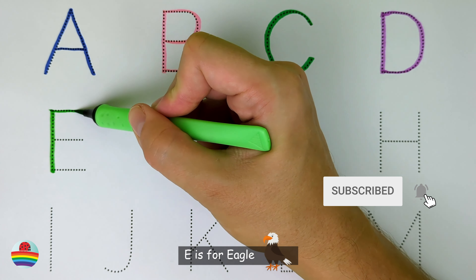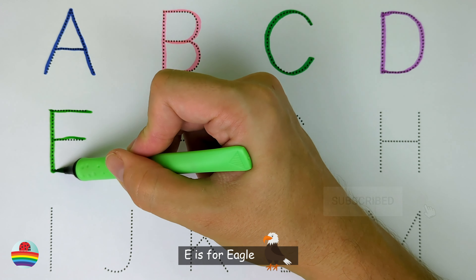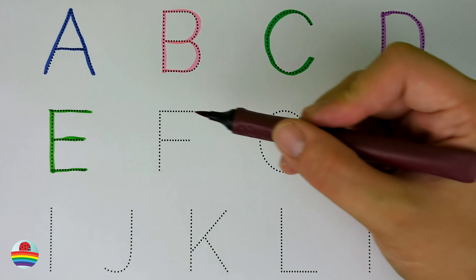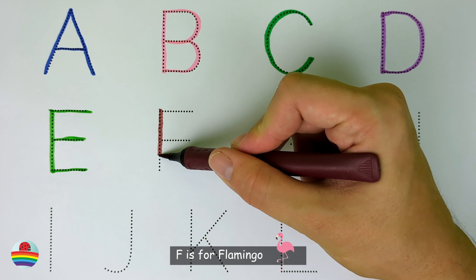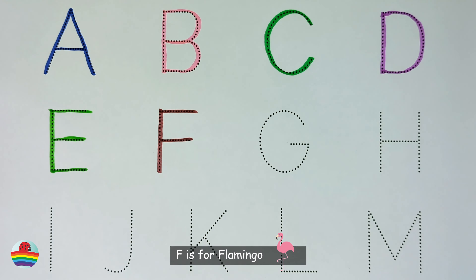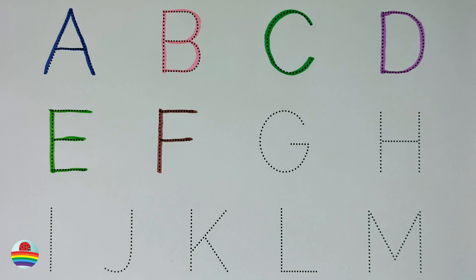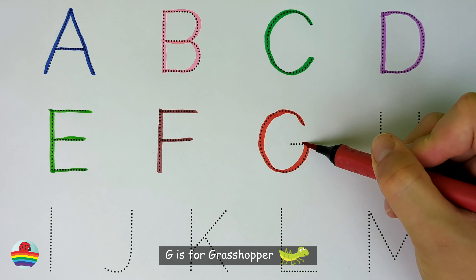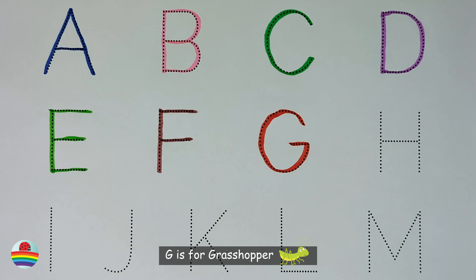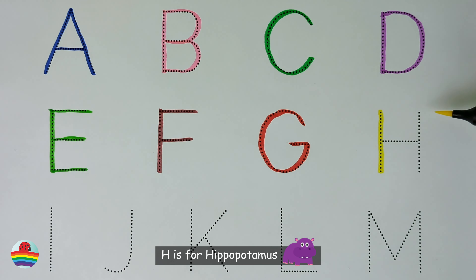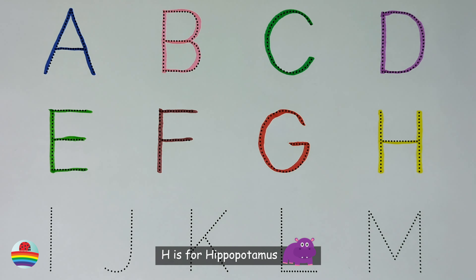E. E is for eagle. F. F is for flamingo. G. G is for grasshopper. H. H is for hippopotamus.